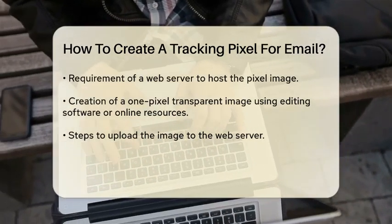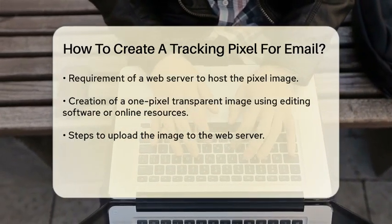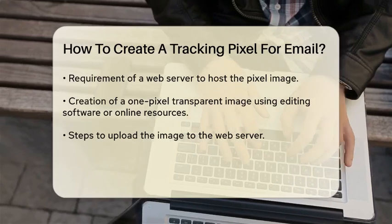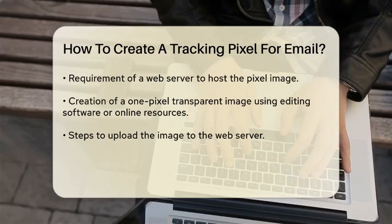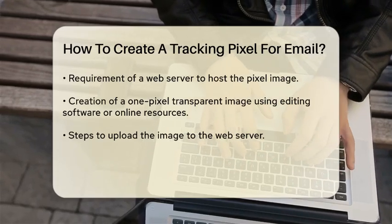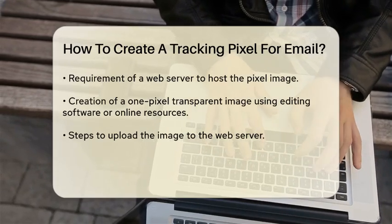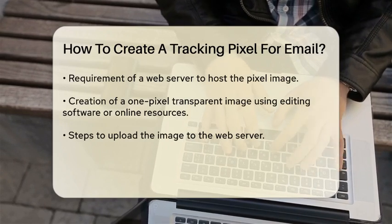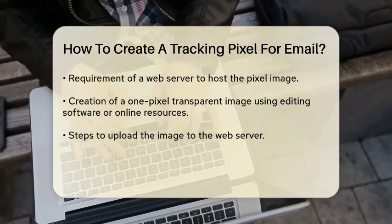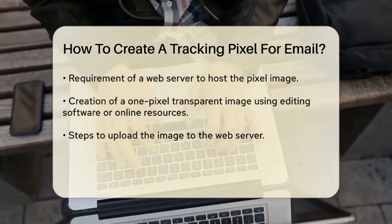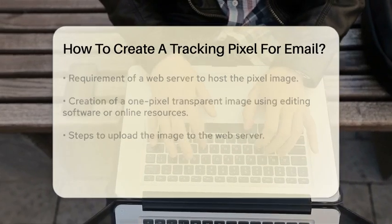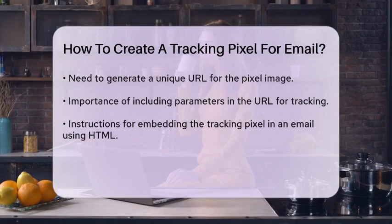Next, you will need to generate a unique URL for the image. This URL is what you will embed in your email. The URL should include parameters that allow you to track specific information, such as the recipient's email address and the time the email was opened.